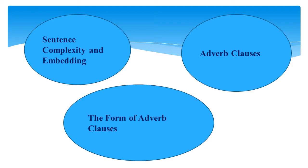Sentence complexity and embedding. Adverb clauses are clauses — a group of words with a subject-predicate pairing, as we have learned. They are signaled with an introductory word called a subordinating conjunction, which is usually a single word, but may be a compound word with or without a space between the root words. The choice of the subordinating conjunction depends on what question the adverb clause answers — its meaning. Some subordinating conjunctions refer to time, some to place, some to manner, and others to conditions or situations.